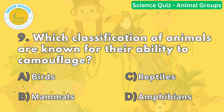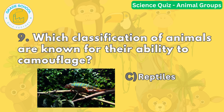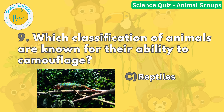Question number nine. Which classification of animals are known for their ability to camouflage? The correct answer is letter C. Reptiles, such as chameleons and certain snakes, are known for their exceptional camouflage abilities. They can change their skin color or pattern to blend with their surroundings, helping them hide from predators or ambush prey.